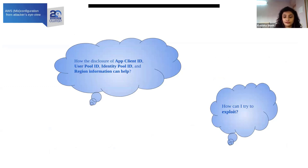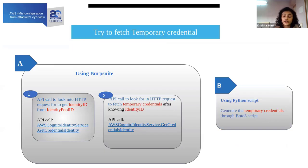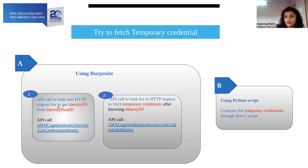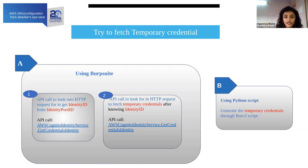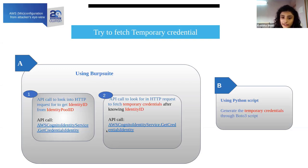The question to ask yourself while testing or looking for misconfiguration: how does the disclosure of app client ID, user pool ID, or identity pool ID help me to exploit this? Figure out the exploitation path. I suggest trying to fetch temporary credentials. You can do this two ways: use Burp Suite, or use a Python script where you explicitly mention the pool ID and region, and you will get the temporary credentials.